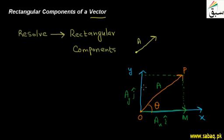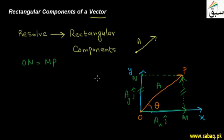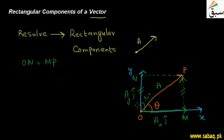The line ON, and MP is similar and parallel to ON, gives the y-axis projection. So we have two components at a 90-degree angle to each other. These are the rectangular components of vector A — one along x and one along y, with a 90-degree angle between them.